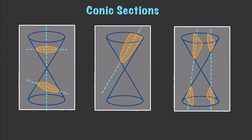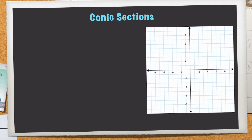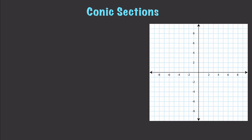So you may say to yourself, well, what is a conic section? A conic section is simply a slice through a cone, and whenever you perform this action, you are going to get either circles or ellipses. Over here, we see that we have a parabola, and then finally, we have what are called hyperbolas. And what we will be doing is using a series of equations to graph these conic sections on the coordinate plane.